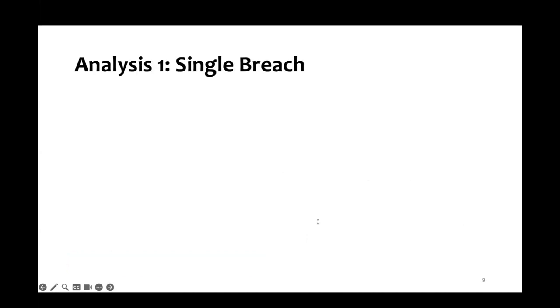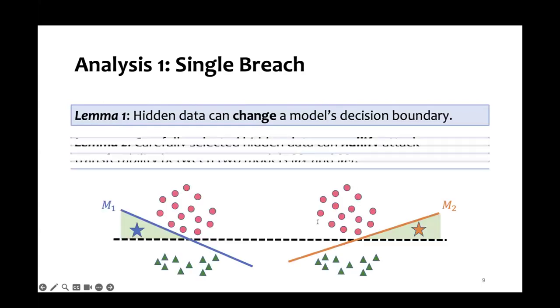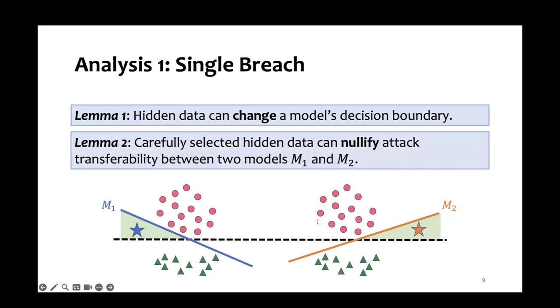Now let's look at the first scenario when there's one model breach. We show that hidden data can, in fact, change model's decision boundary. Moreover, we show that if we carefully select the hidden data, we can reduce the transferability between two models, M1 and M2, to zero. As we can see in the illustration, when M1 and M2 do not share any region of vulnerability in common, none of the attacks transfer from one model to the other.